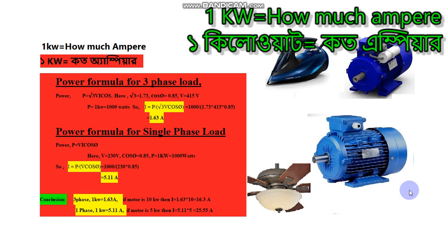This gives us an ampere rating of 5.1 amperes — that is the current consumption of a single-phase motor or load. So in conclusion: for a three-phase load, 1 kilowatt equals 1.63 amperes, and for a single-phase load, 1 kilowatt equals 5.1 amperes.